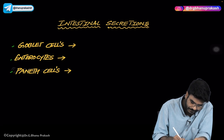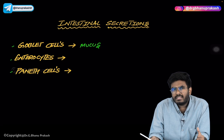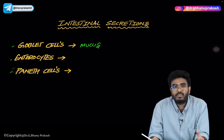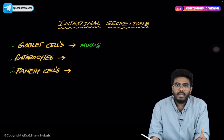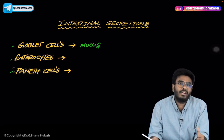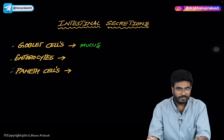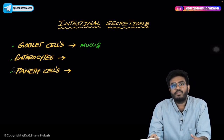Goblet cells are the ones associated with the production of mucus. To recap: the cells which produce mucus in the stomach are surface mucus cells, also called foveolar cells. The cells that produce mucus in the duodenum are called Brunner's glands. In the same way, goblet cells are the ones which produce mucus in the intestines.